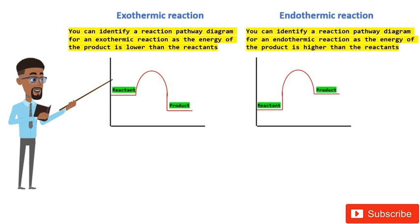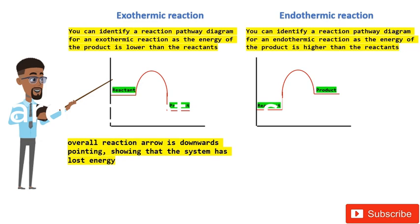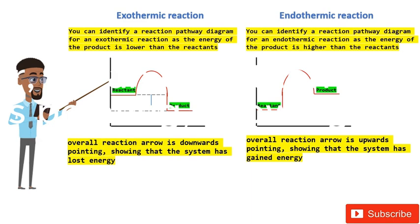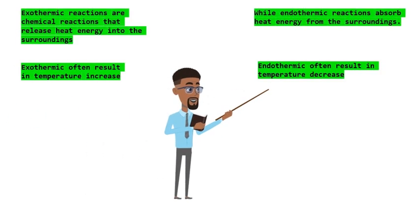For an exothermic reaction, the overall reaction arrow is downwards pointing, showing that the system has lost energy. Since the reaction loses energy, we draw the arrow pointing downwards. However, for an endothermic reaction, the overall reaction arrow is upwards pointing, showing that the system has gained energy. So in summary, exothermic reactions release heat energy and result in a temperature increase, while endothermic reactions absorb heat energy and result in a temperature decrease.